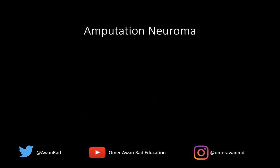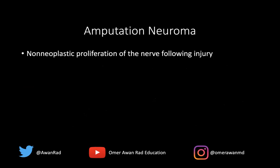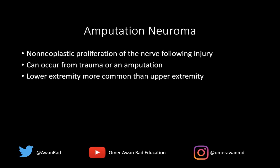This is an amputation neuroma. This is something that we expect to occur after you've amputated or transected a nerve. It's a non-neoplastic proliferation of the nerve after an injury. This is a normal response of the body — when you amputate or transect the nerve, it regenerates or starts to have non-neoplastic proliferation to try to regrow those cells. This occurs typically after trauma or an amputation.